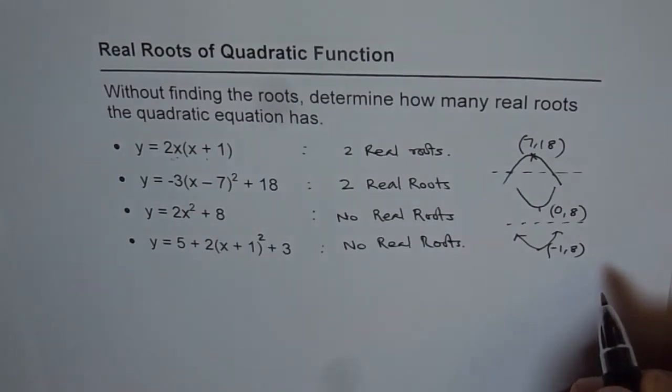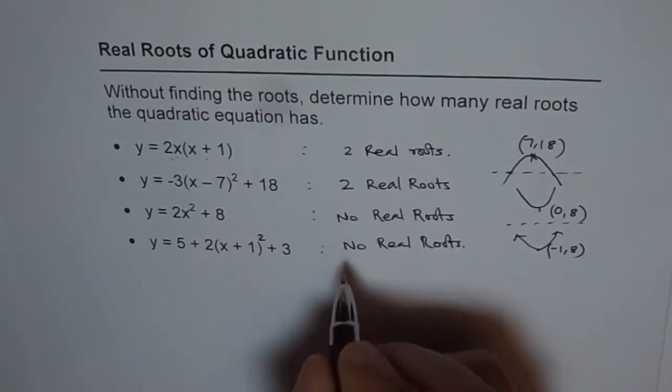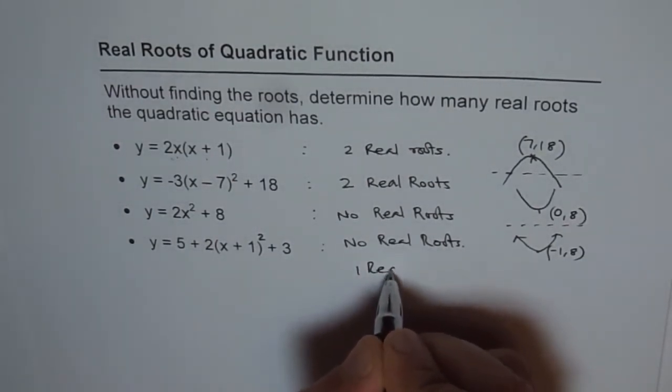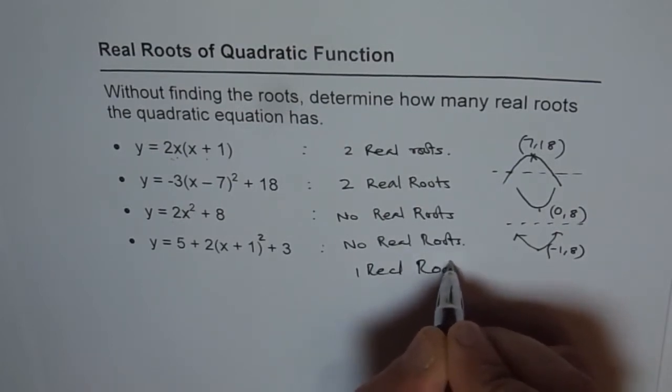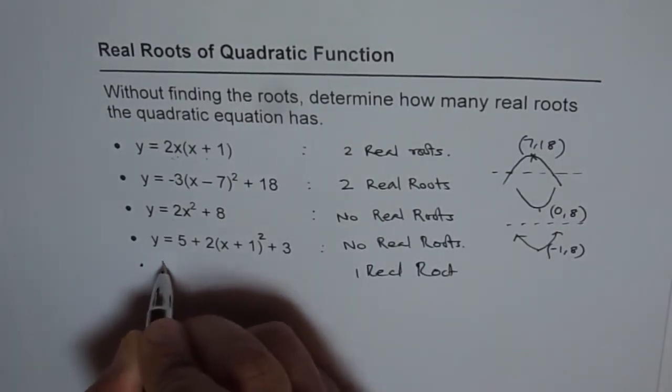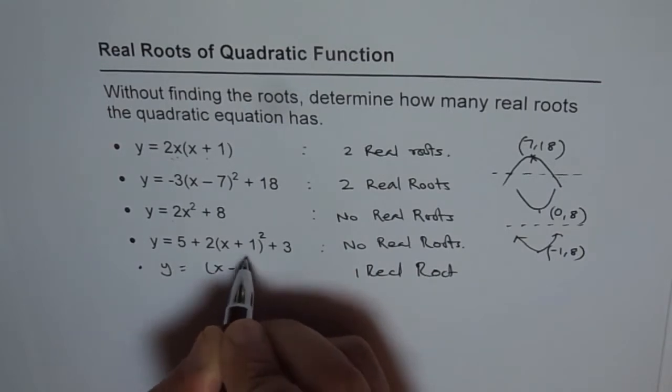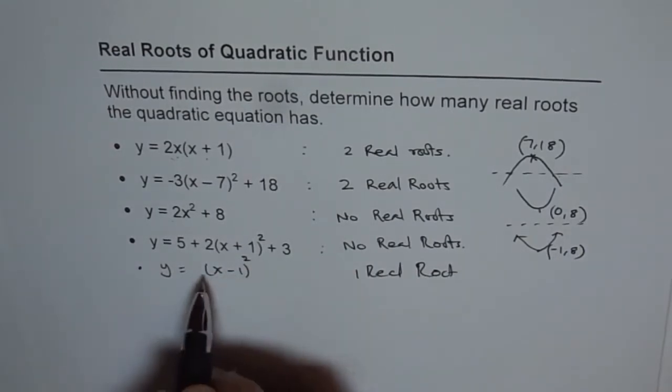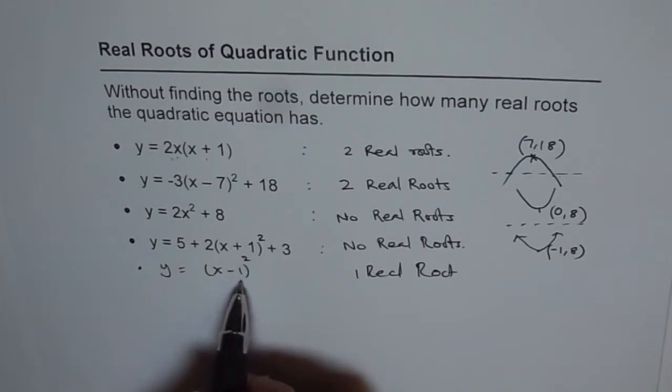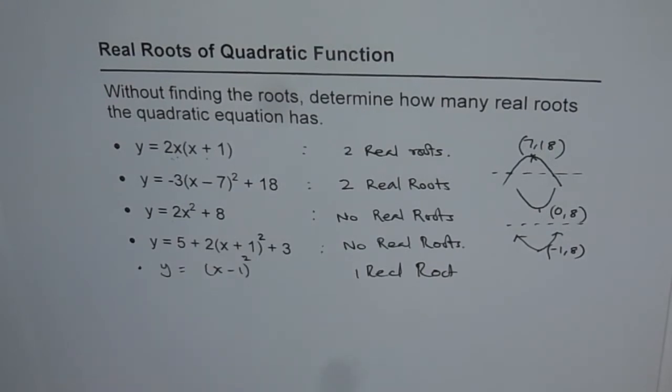Now can you give me an equation of a parabola which will have one real root? Let's make one. So one real root is possible if we have equation like y equals to x minus 1 whole square. So here the vertex itself is on the x axis and we have two zeros there. So it's one real root. So that is how you can have equations with 1, 2 or no real roots. Thank you.